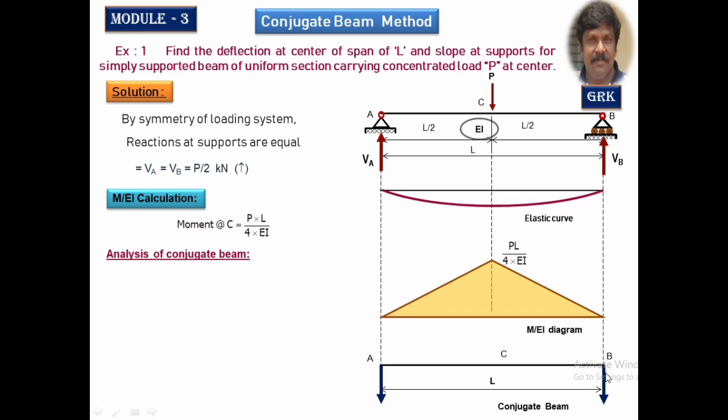Since we are solving this problem by the conjugate beam method, we have to set up the fictitious beam. In this case, I am going to take the reactions in the opposite direction to the loading system, as explained in the earlier session. The load on the fictitious beam or conjugate beam will be the area of the M by EI diagram. We are not going to take the given load on the true or real beam; the load on the imaginary beam will be taken equal to the area of the M by EI diagram.